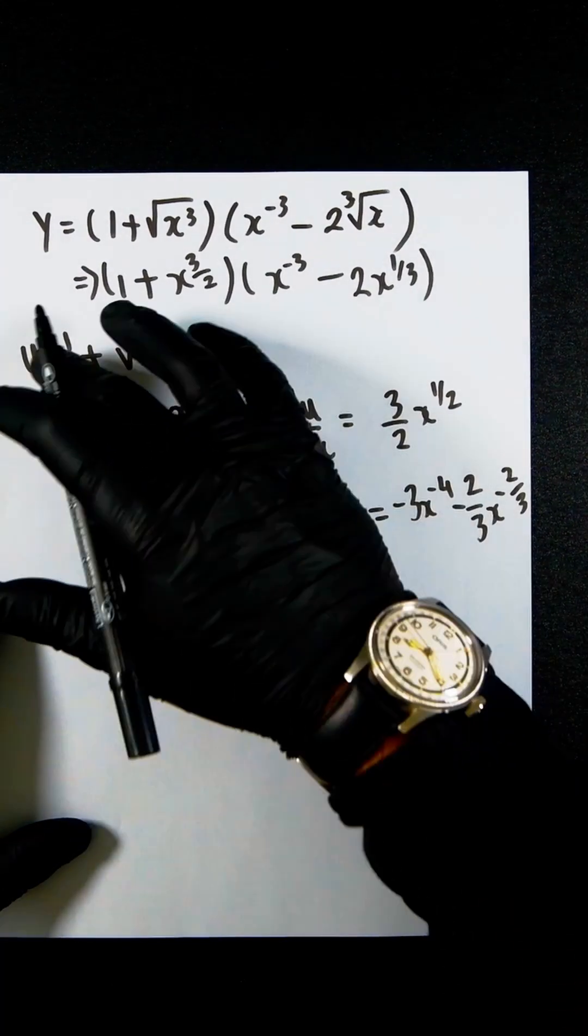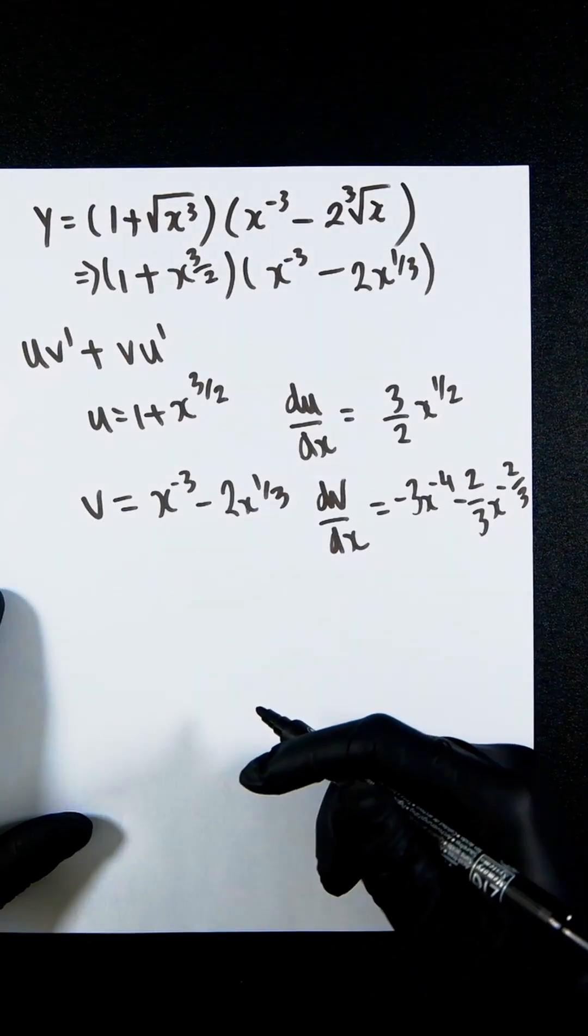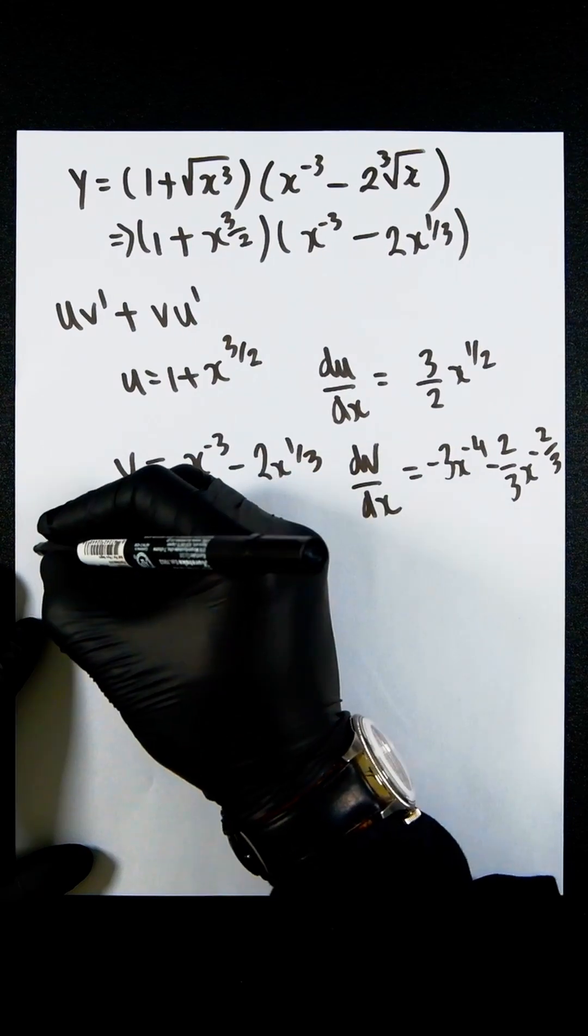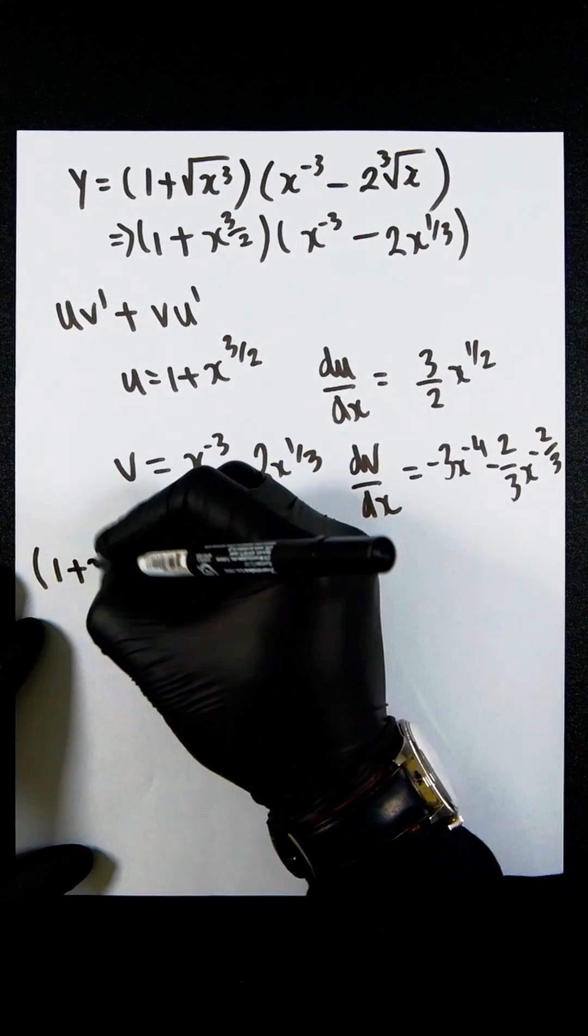We can now substitute all of these into here. So we're going to now get 1 plus x to the 3 over 2.